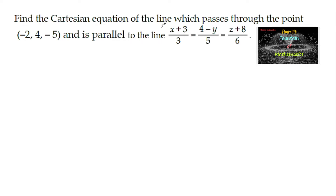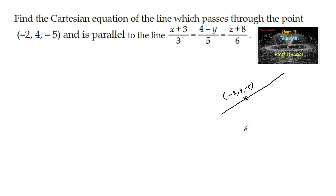Find the Cartesian equation of the line which passes through the point (-2, 4, -5) and is parallel to another line.